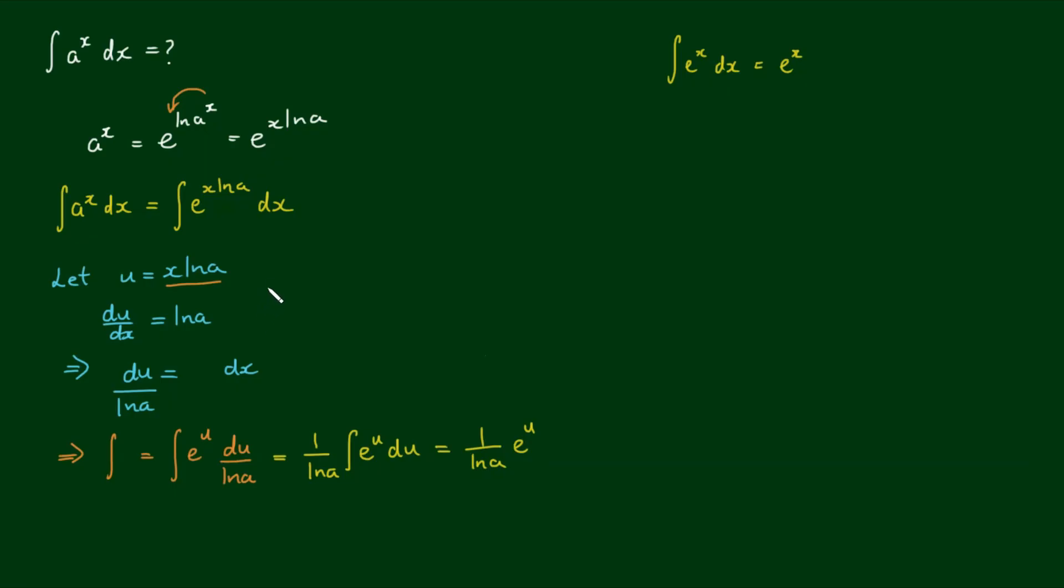And all that's left to do is to back substitute u for x by the log of a. So it equals 1 on log of a by e to the x by the log of a, which we said from up here was equal to a to the x.